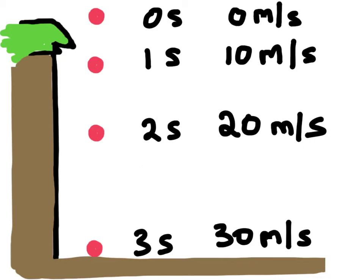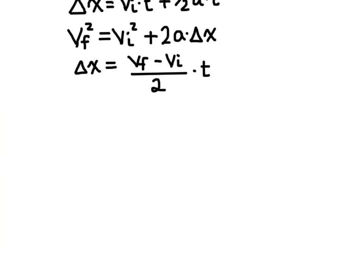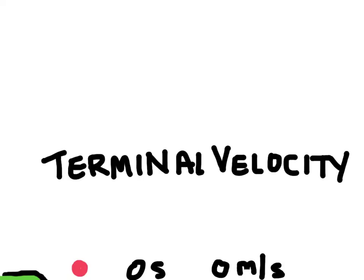What if the cliff was very high — would the object just continue to accelerate indefinitely? Eventually the force of air resistance is going to balance out the force of gravity and acceleration will essentially stop. We call this terminal velocity — terminal velocity is when the force of gravity equals the force of air resistance, so there's basically no net force acting on it and therefore no acceleration.